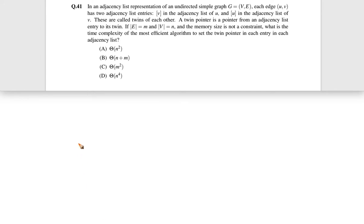Now let's see this question. This question came in GATE 2016 for two marks. The question is: in an adjacency list representation of an undirected simple graph G = (V, E), each edge (u, v) has two adjacency list entries — v in the adjacency list of u, and u in the adjacency list of v.